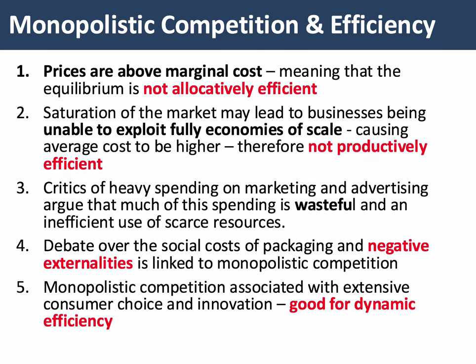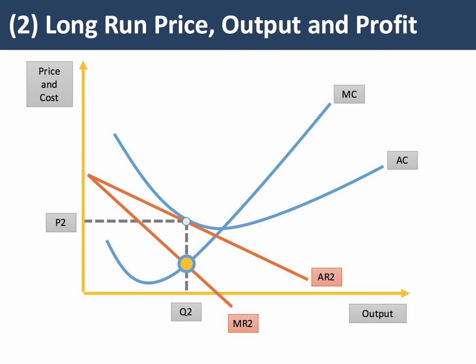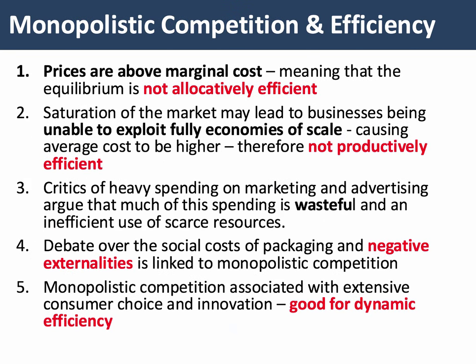What about monopolistic competition and the outcomes for economic efficiency? Looking at our long-run diagram, price P2 is higher than the marginal cost of supply at Q2, so this equilibrium is not allocatively efficient. Equally, if the market becomes saturated with many producers producing many different products, the leading players may not be able to fully exploit economies of scale, so there is a possibility that we also lose out on some productive efficiency.